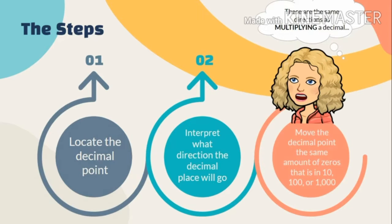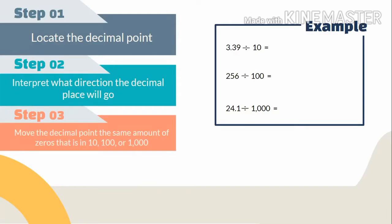We have three problems. Example number one: 3.39 divided by 10. Step one — look at the decimal point; the decimal point is here. Step two — the decimal place will go to the left. Step three — move the decimal point the same number of zeros as in ten: one zero. So the decimal moves one place to the left, and the answer we get is 0.339.